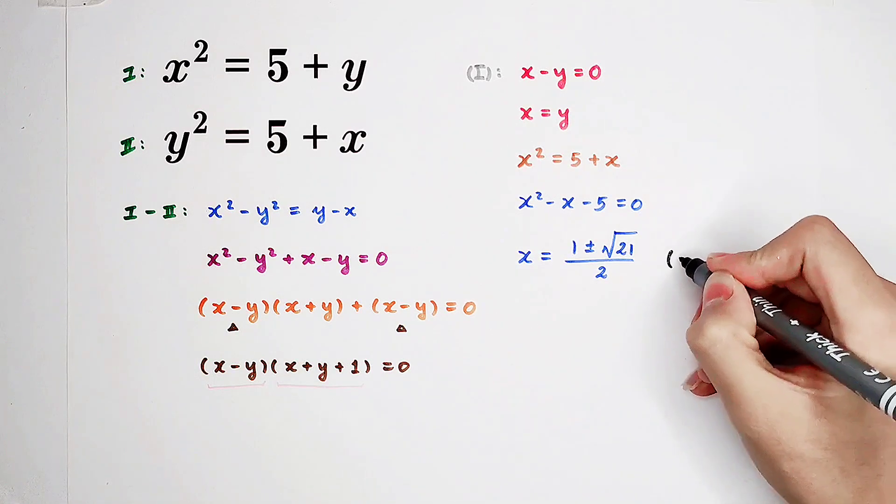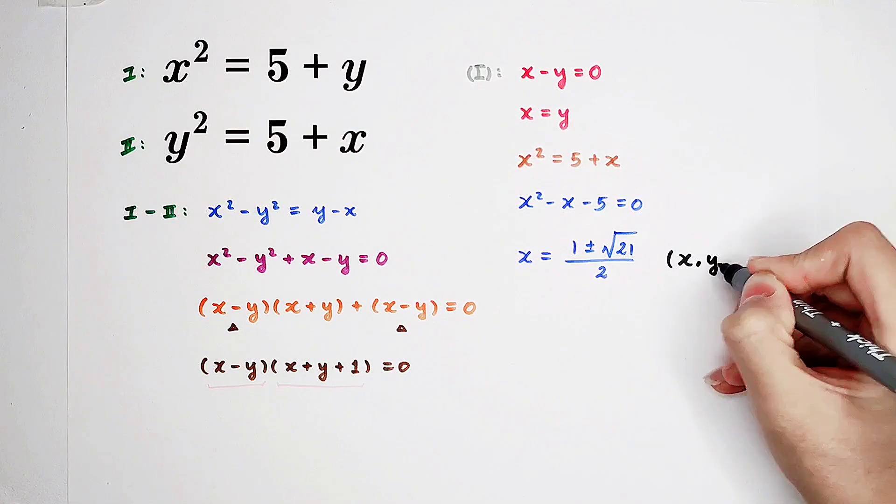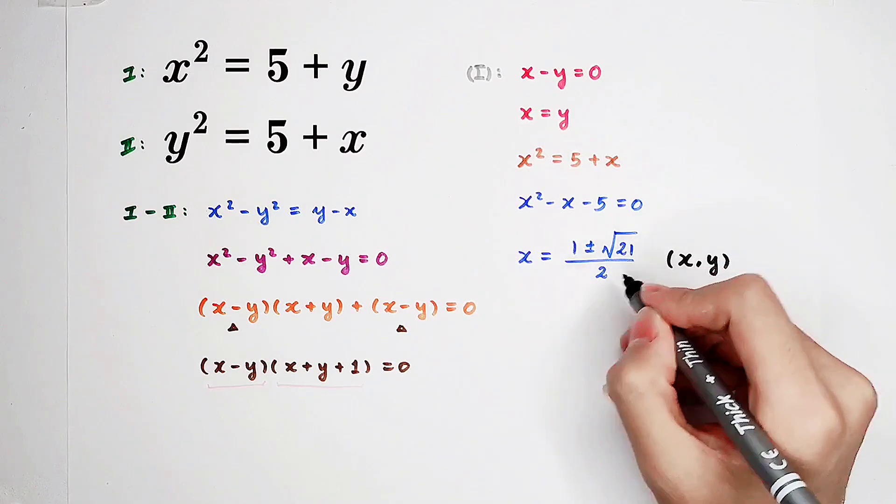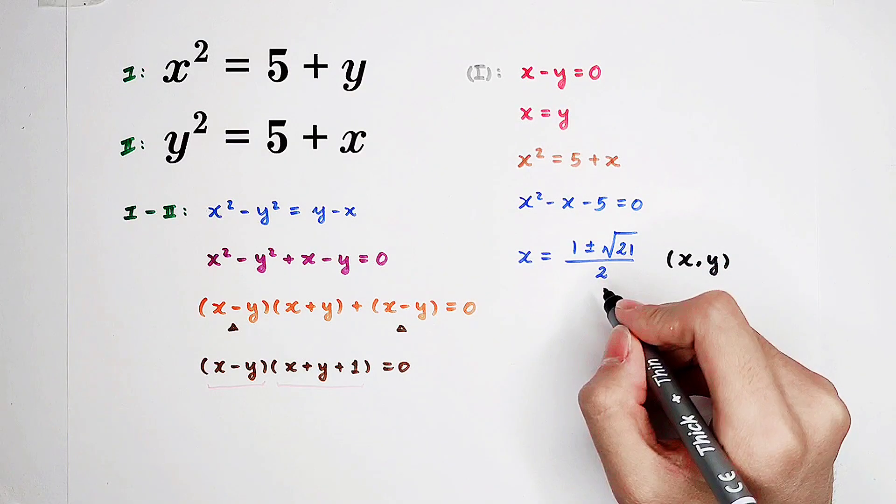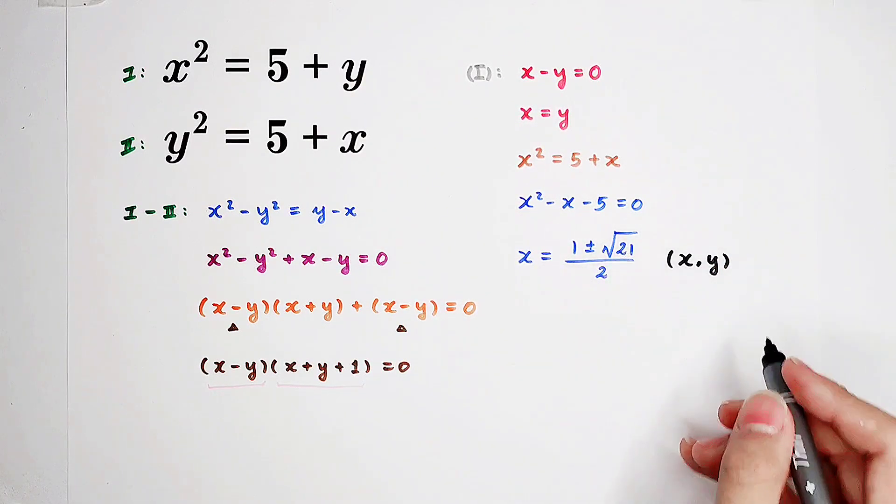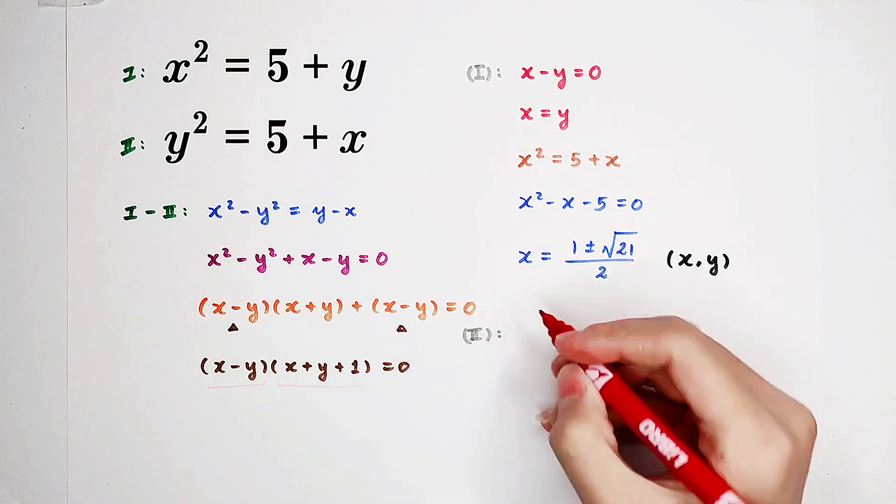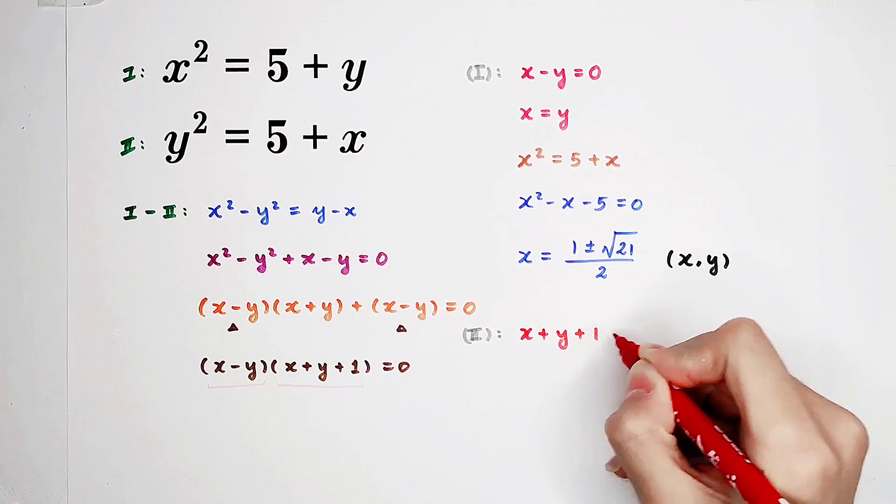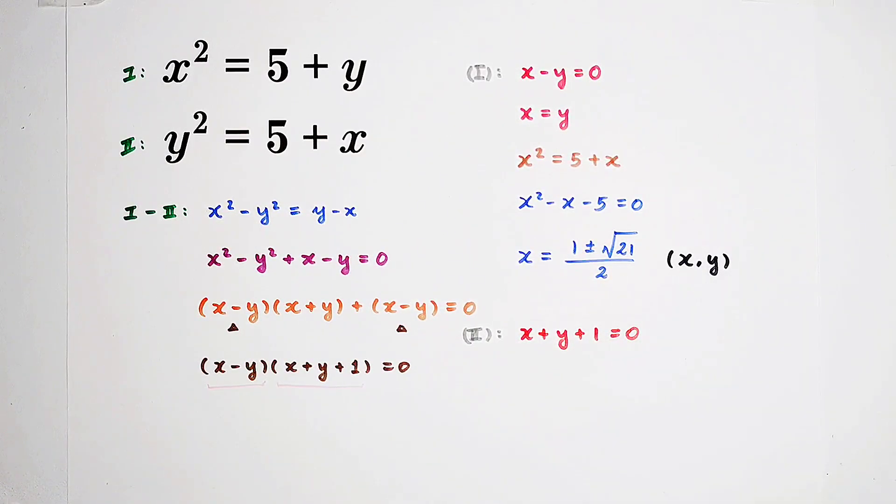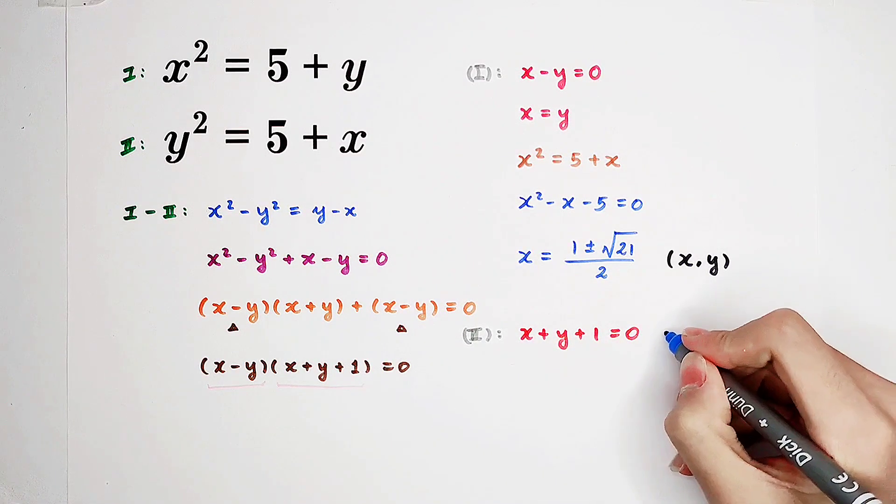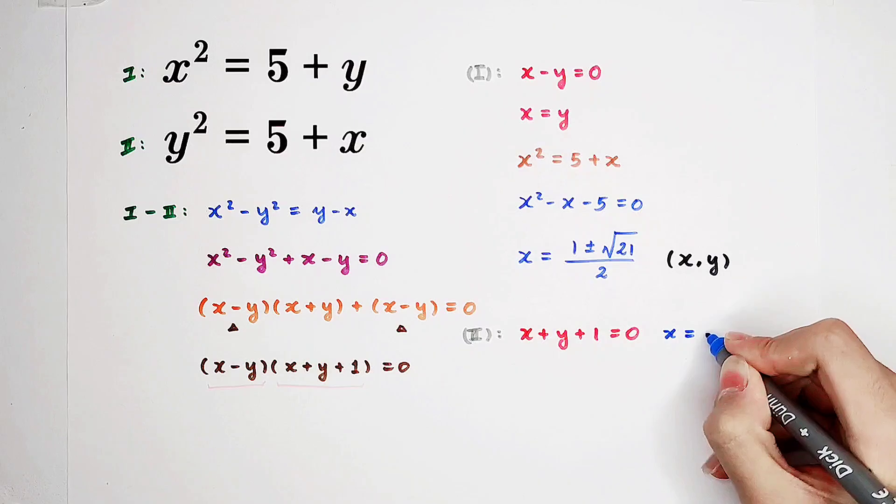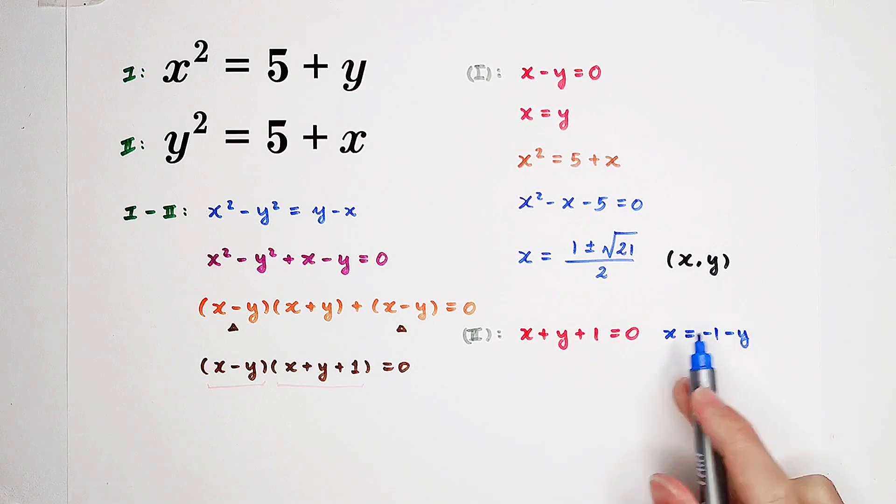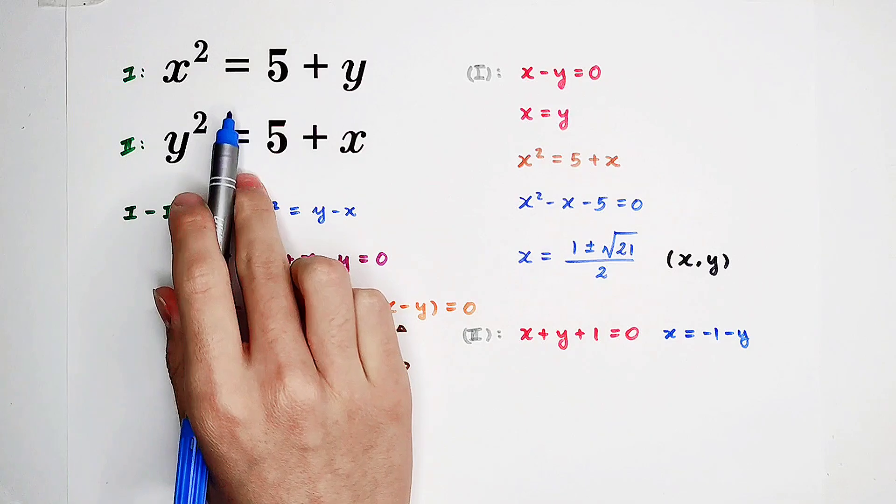So now we can get two pairs of solutions of x, y. Either they are both 1 plus square root of 21 over 2, or they are both 1 minus square root of 21 over 2. We also have our second case. If this one equals 0, x plus y plus 1 equals 0. Then we can get x equals negative 1 minus y.